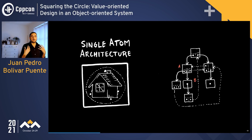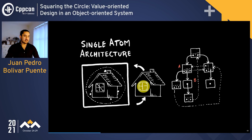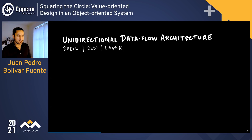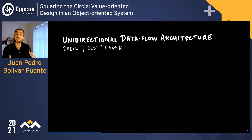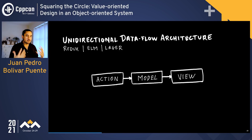The problem with the Single Atom Architecture is modularity. If I'm working on a program modeling a house and want to turn on the light in one particular room, I have to extract the value, produce a whole new house with that light turned on, and put it back. We lose modularity. One solution is the Unidirectional Data Flow Architecture, implemented in libraries like Redux, Elm, or Lager — a C++ library I wrote that everything I'm presenting today is part of.